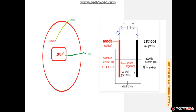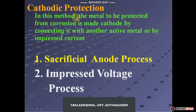Before discussing the impressed voltage process: when a metal is exposed to the environment, the metal acts as an anode. By making it cathode, it is protected from corrosion. This is called cathodic protection.